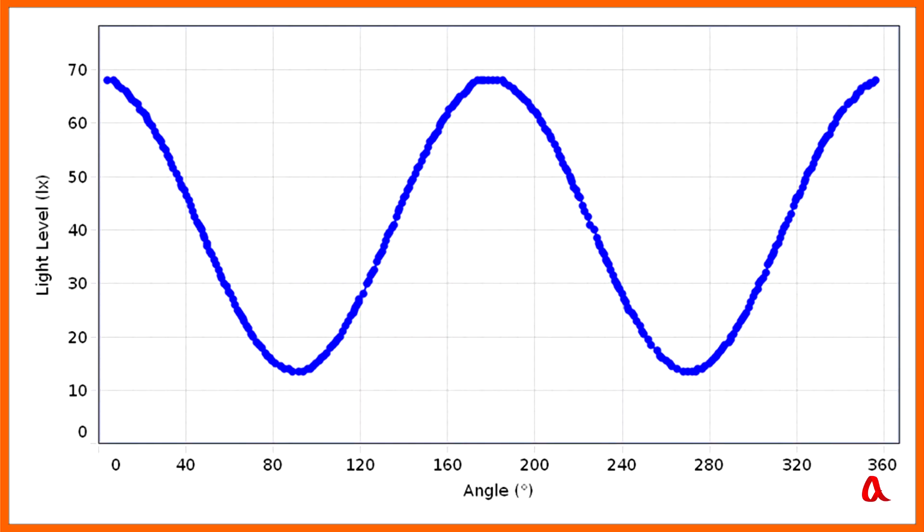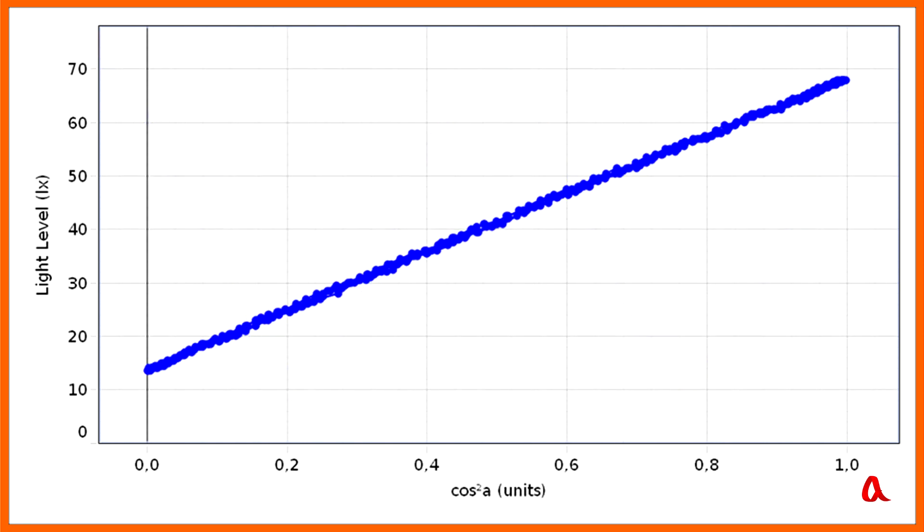Here's how the light sensor reading depends on the angle of rotation. Maxima are reached when the axes of both polarizers are parallel. Minima when they are crossed. At minima the illuminance does not drop to zero because the polarizers are not perfect. Let's replace the angle with the square of its cosine. This dependence is linear with good accuracy. Thus Malus's law is satisfied even when adjusted for the imperfection of polaroids.